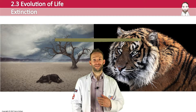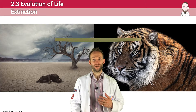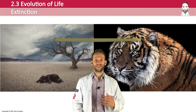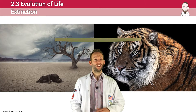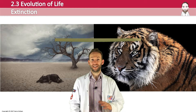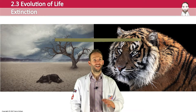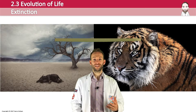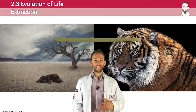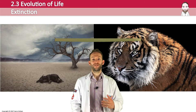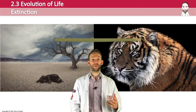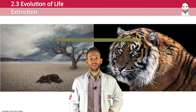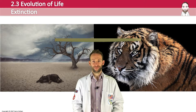When a species disappears from the earth entirely, it is said to be extinct. Organisms at risk of becoming extinct are described as endangered. The fossil record shows that 98% of all species that have ever existed are now extinct. Extinction is a normal process and it occurs at a rate of about 1 per 1 million species per year — what we call background extinction.